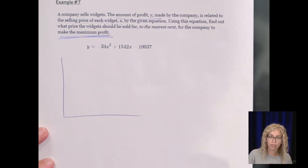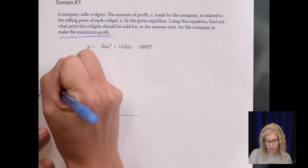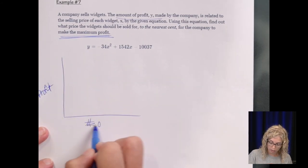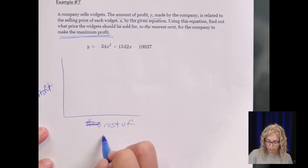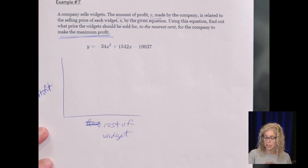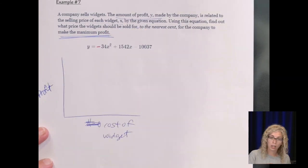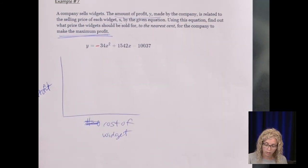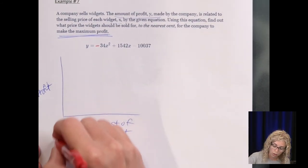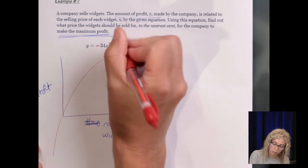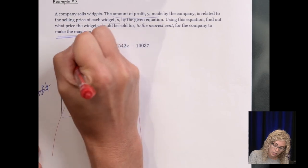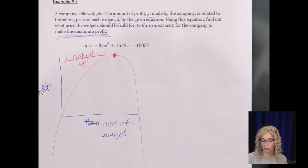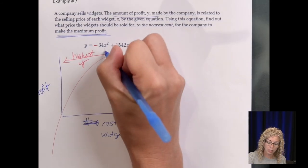So the selling price is x and then the profit is y. So if we think of this as a graph, so here's our profit and here's our number or the selling price, so cost of widget. It's negative so it's going to be opening upside down and you can go to the calculator and type that in. So let's just draw an upside down curve and we want the maximum profit so the highest y value. So in order to know the highest y we must need to know x. So we use that axis of symmetry.